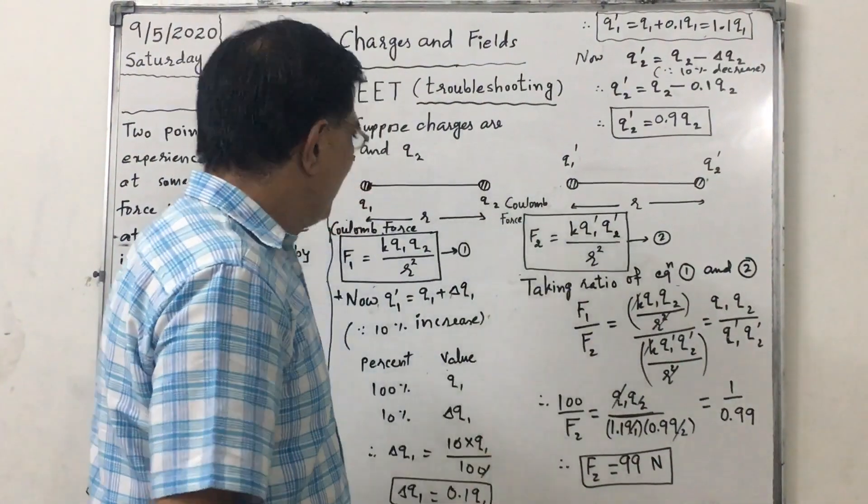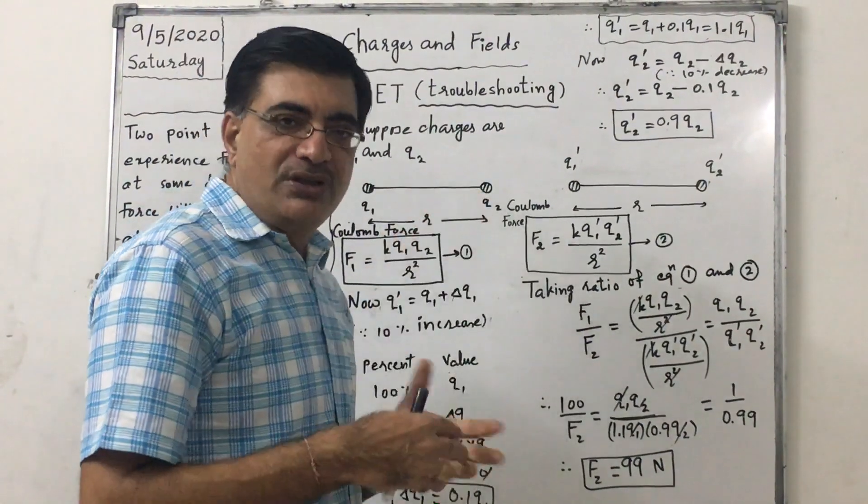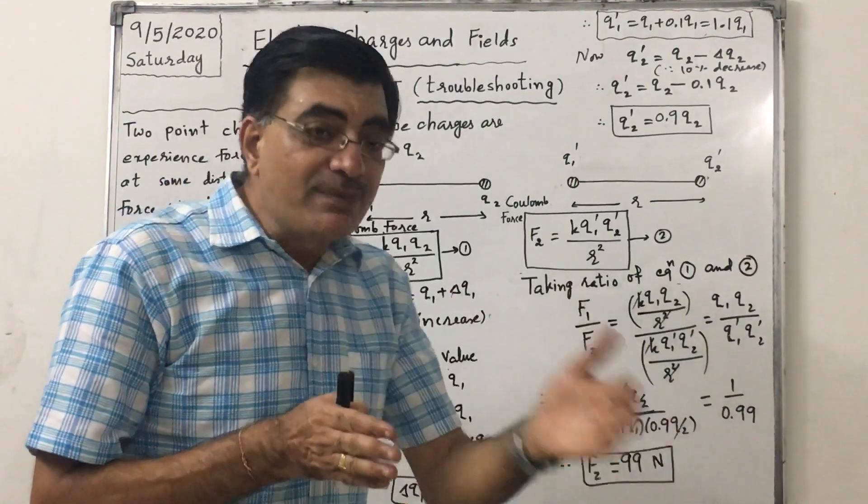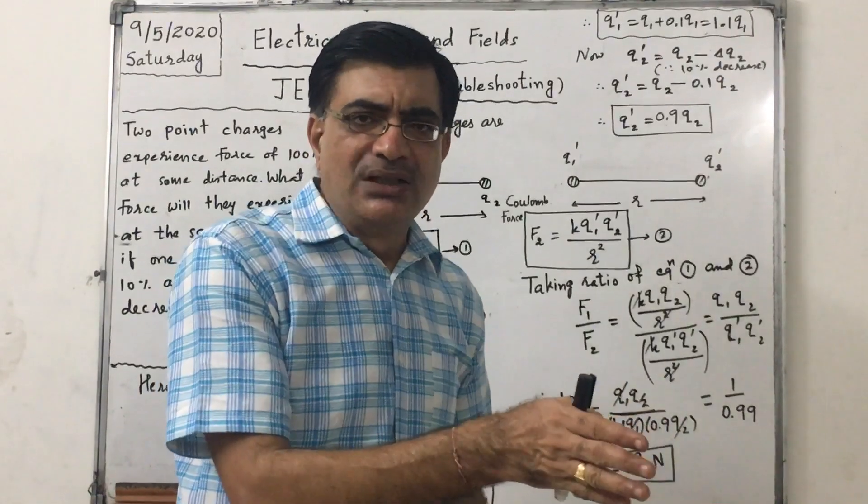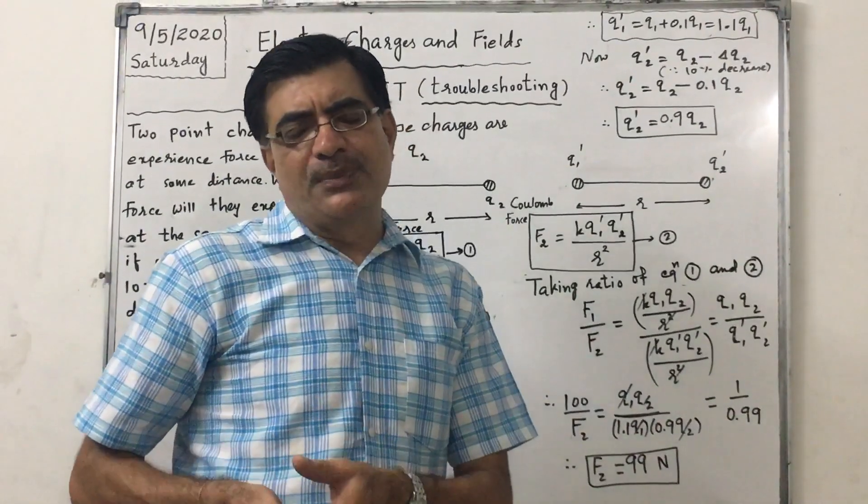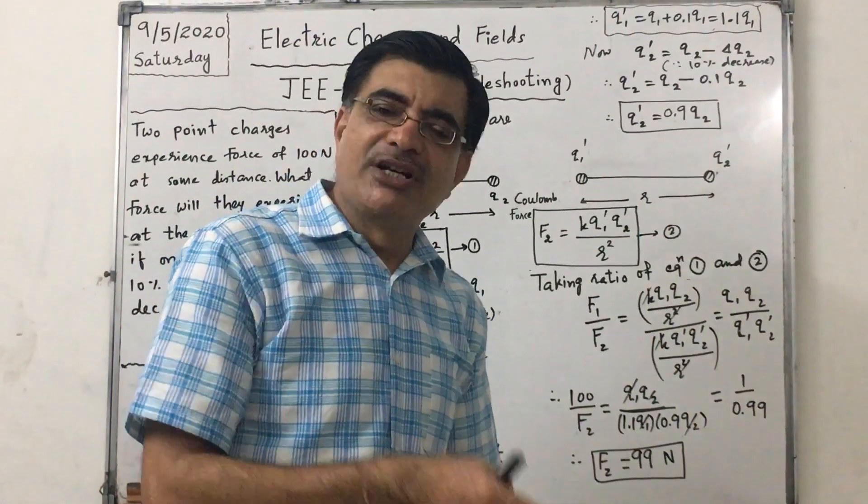Now Q2 dash, that is the new value of the second charge. It is reduced by 10%. So 100% equals Q2, then 10% will be equal to delta Q2. It will be again 0.1 Q2.